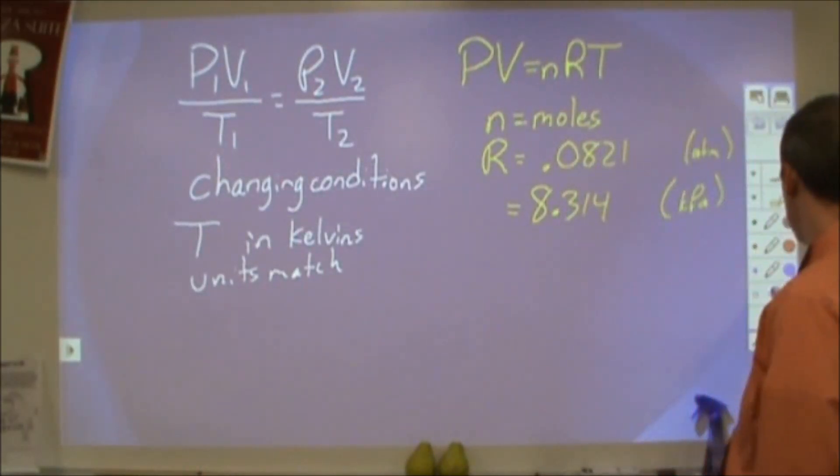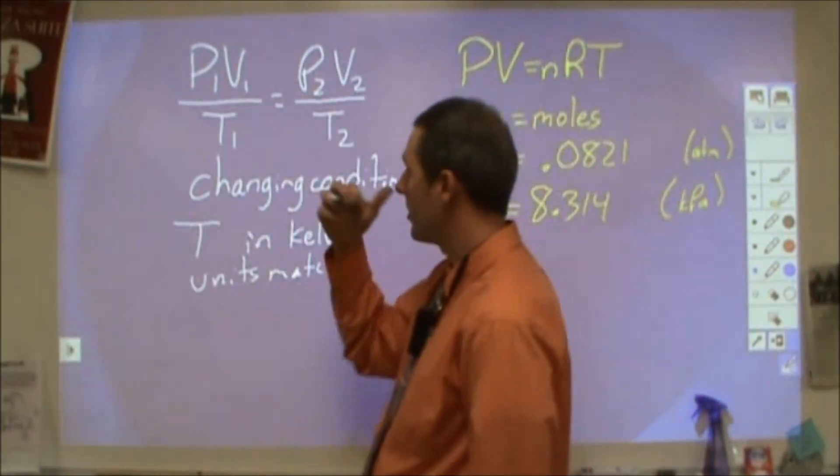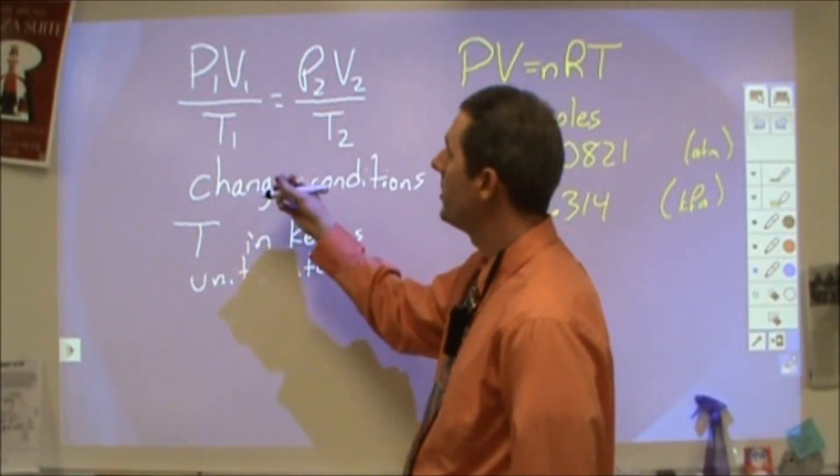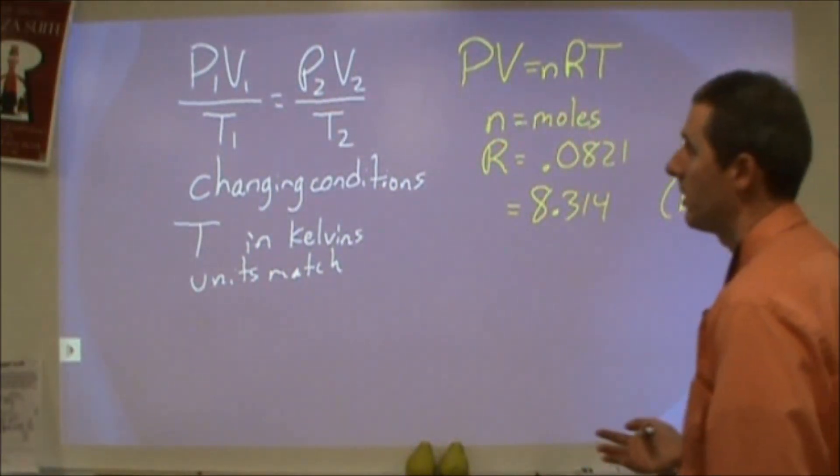So the biggest distinctions between these are that for the PV over T equals PV over T, you're changing the conditions. So in a problem like this, you're going to see here's our pressure to begin, here's our pressure at the end, how did the temperature change, or something to that effect.